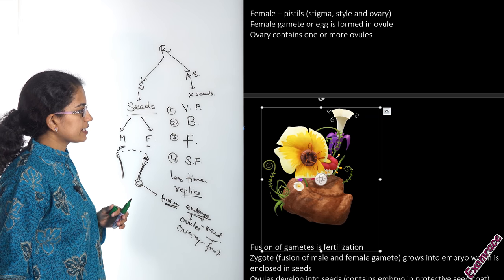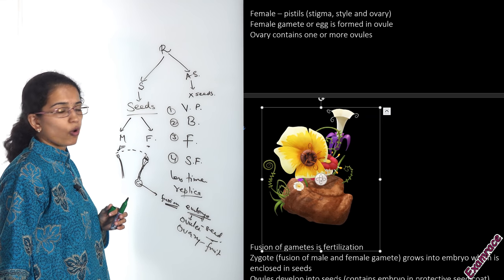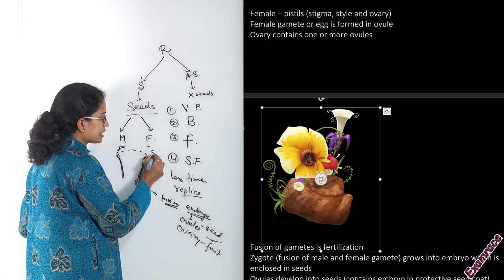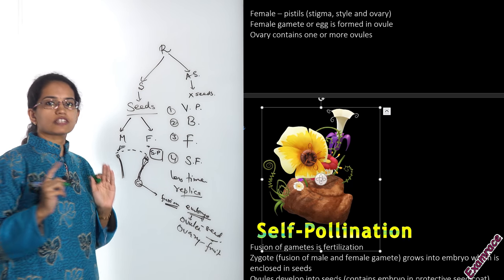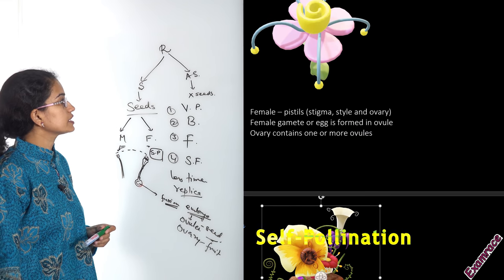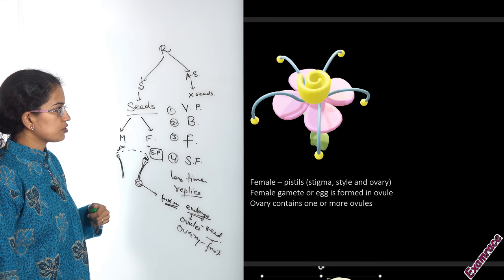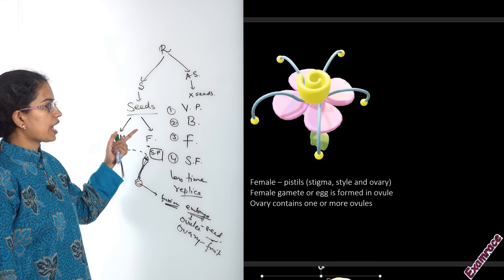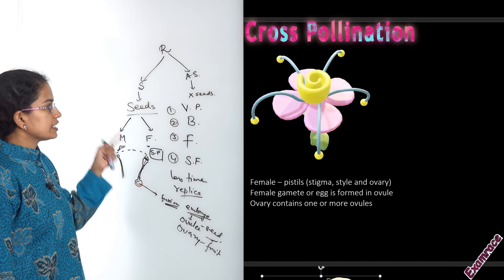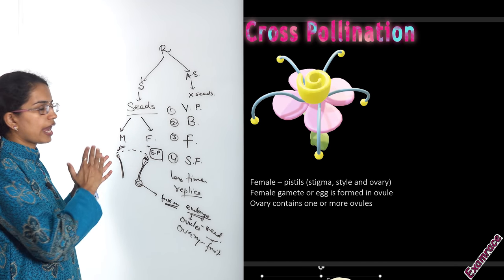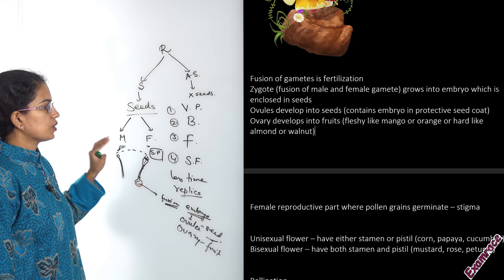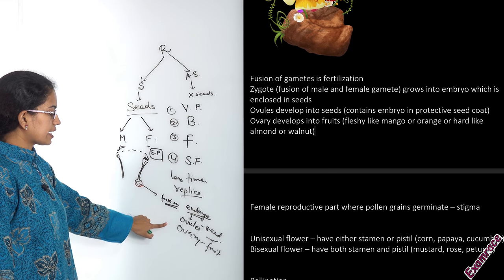If both the male and female reproductive parts are present on the same flower, it is called self-pollination. However, in certain cases there are unisexual flowers — flowers that have only the male or only the female reproductive part. In those cases, cross-pollination takes place, meaning the two reproductive parts are present on different flowers. Once the ovary develops into a fruit, you have small ovules — usually six to eight in number — inside it, and these ovules later convert into seeds.